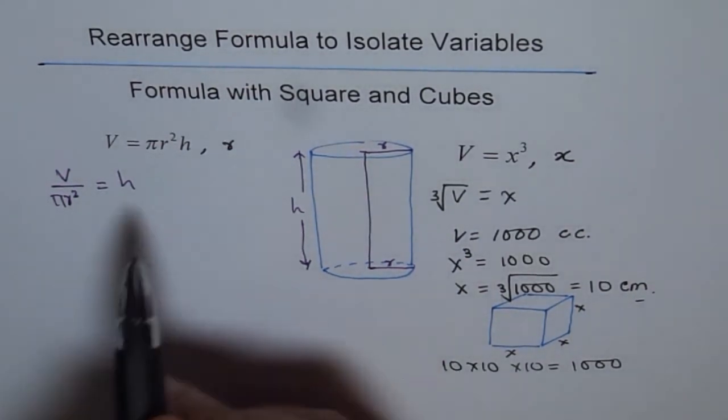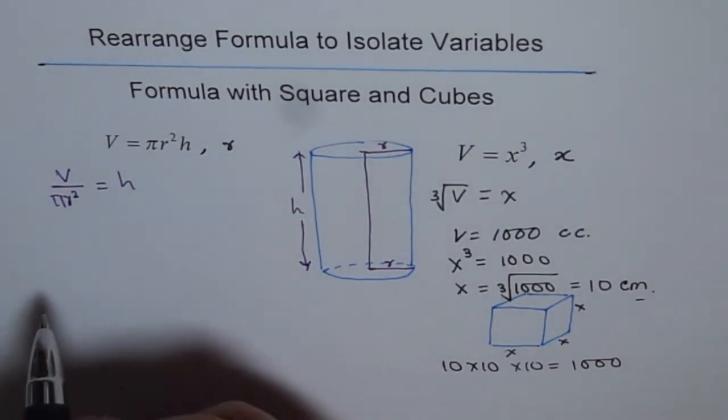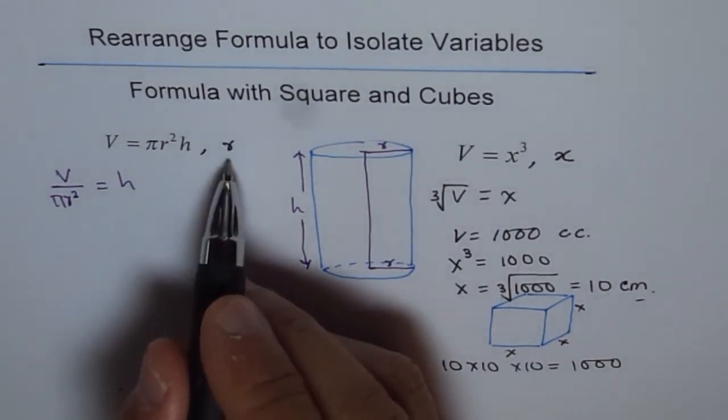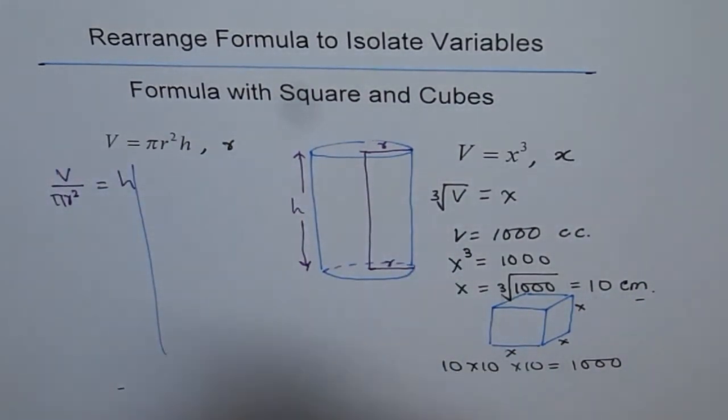So that is how I can rearrange this formula and find height. If you want to find radius, then what will you do? So this is height formula. And if you want to do radius, then what should you do?